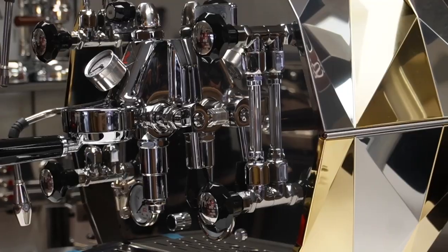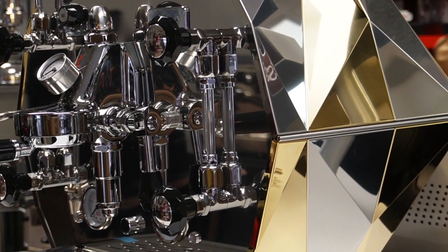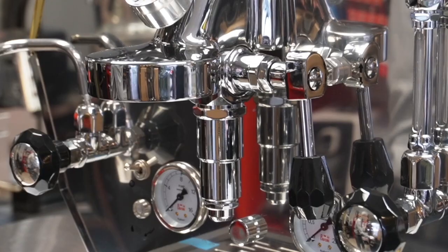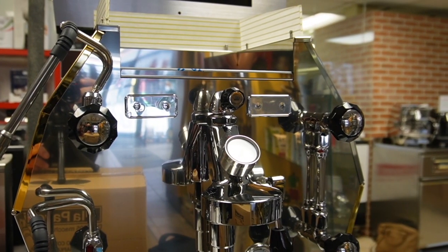The Diamantina is equipped with an E6D1 brewing group, an industry standard for professional espresso machines. This brew group is complemented with a profile pressure gauge.